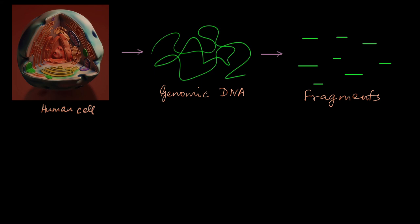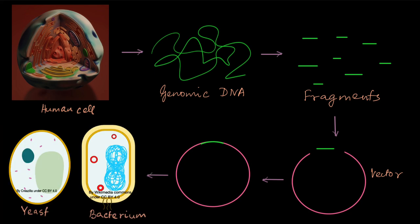Once they got smaller fragments what they did was they took each fragment and inserted it into a vector. Now what do I mean by a vector? A vector is a circular DNA molecule which can be cut at a certain place and at that place a fragment can be inserted and then they joined the fragment with the vector. So each fragment was joined with a certain vector molecule and then they put this vector with the fragment inside another cell either a yeast cell or a bacterium.